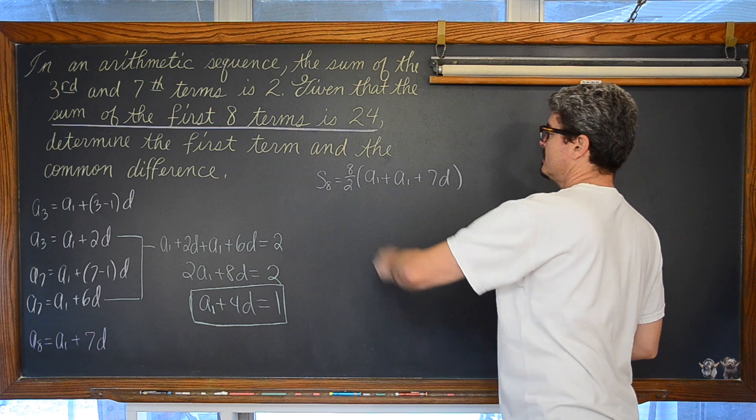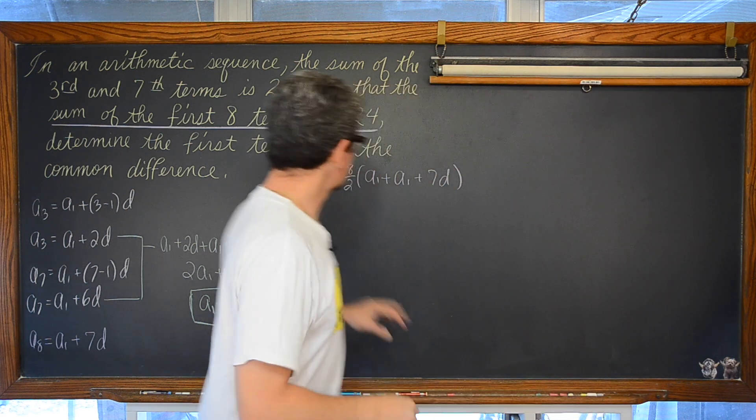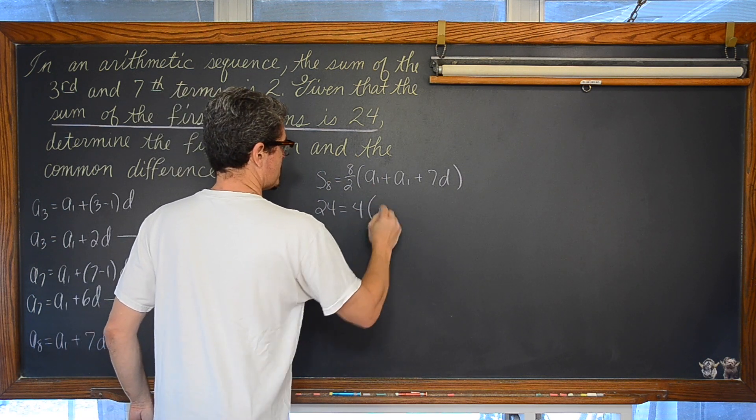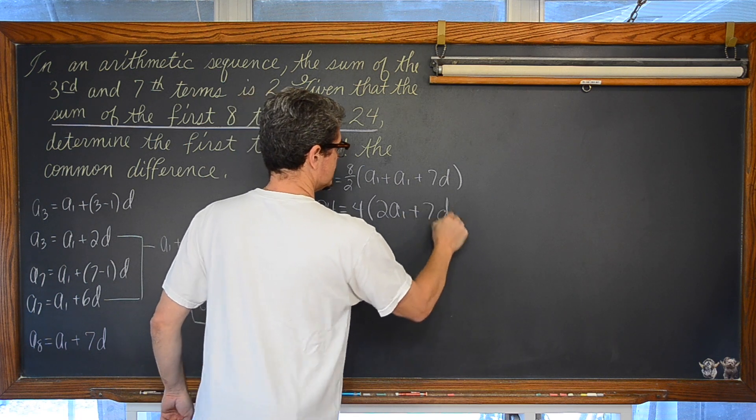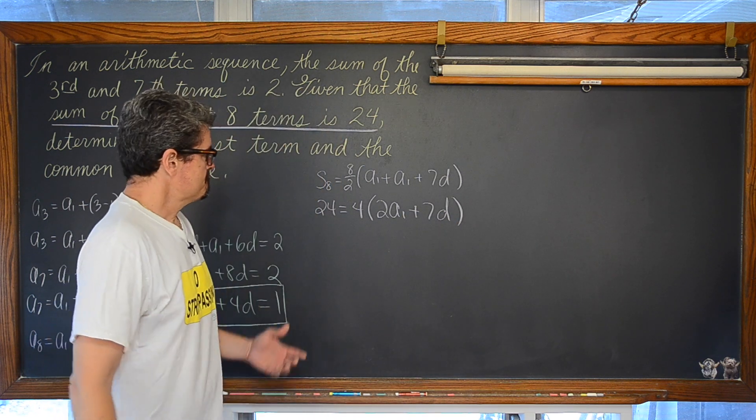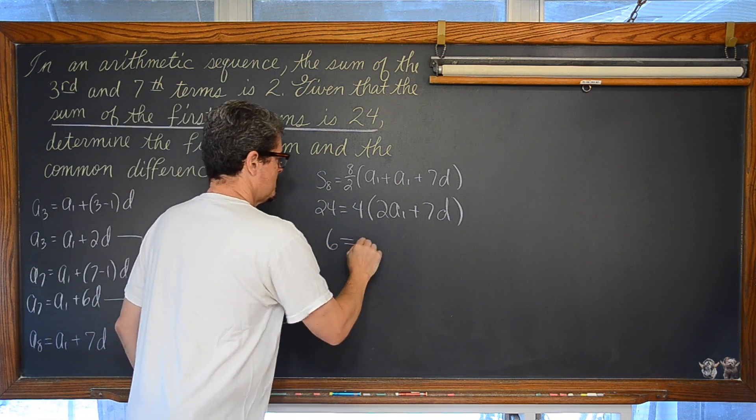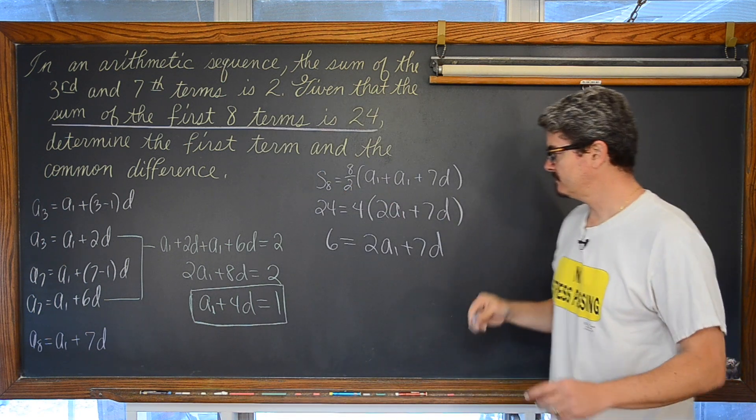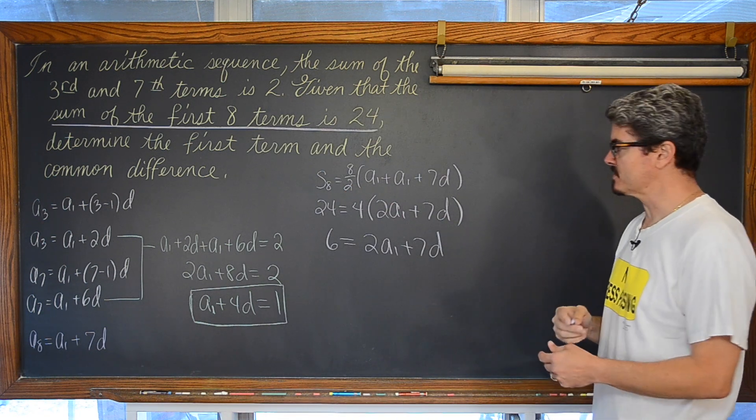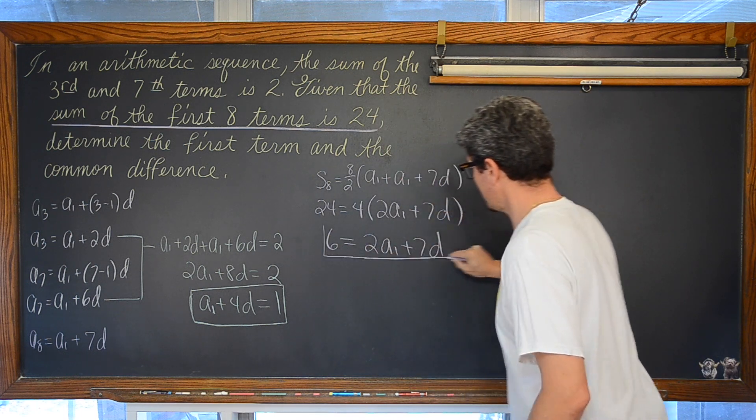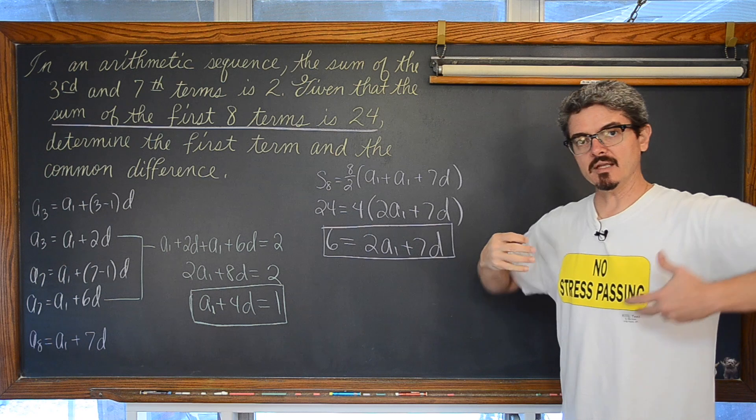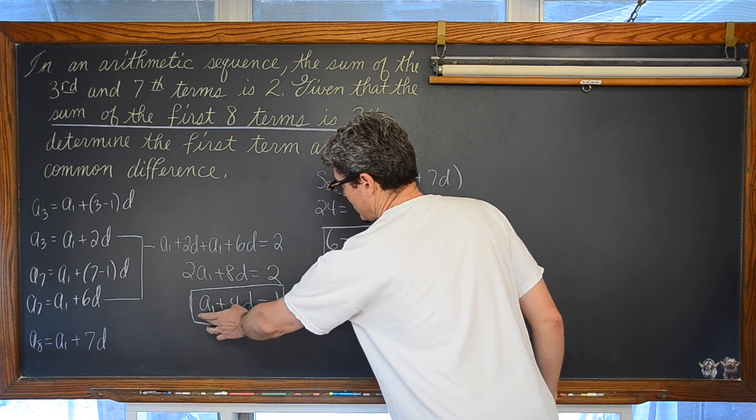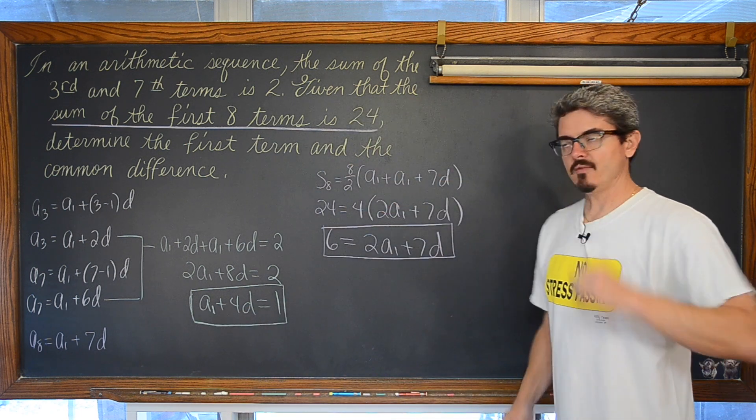And the sum of the first 8 terms is equal to 24. So we have 24 is equal to 4 times a sub 1 plus a sub 1 is 2 a sub 1 plus 7d. Divide both sides by 4 and we get 6 is equal to 2 a sub 1 plus 7d. Well, I still don't necessarily know much, but we are getting close. We have a formula relating a sub 1 and d together based on the sum of the first eight terms. We have got a relation between a sub 1 and d for when we add the third and the seventh term.